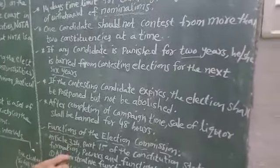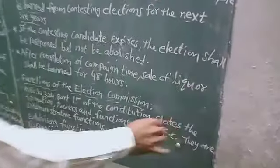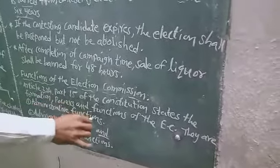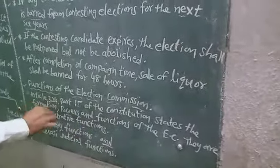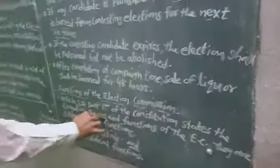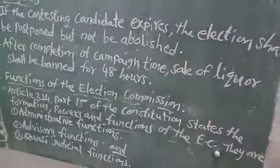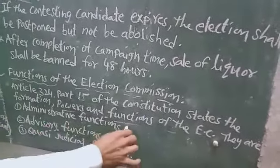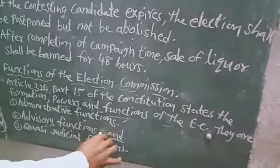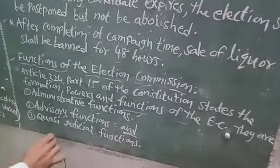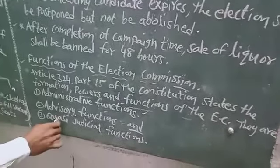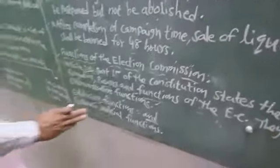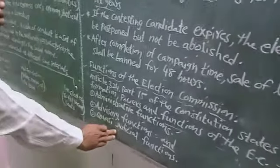Functions of the Election Commission are defined under Article 324, Part 15 of the Constitution, which states the formation of powers and functions. There are three types: superintendence functions, advisory functions, and quasi-judicial functions. The Election Commission is a fully autonomous body.